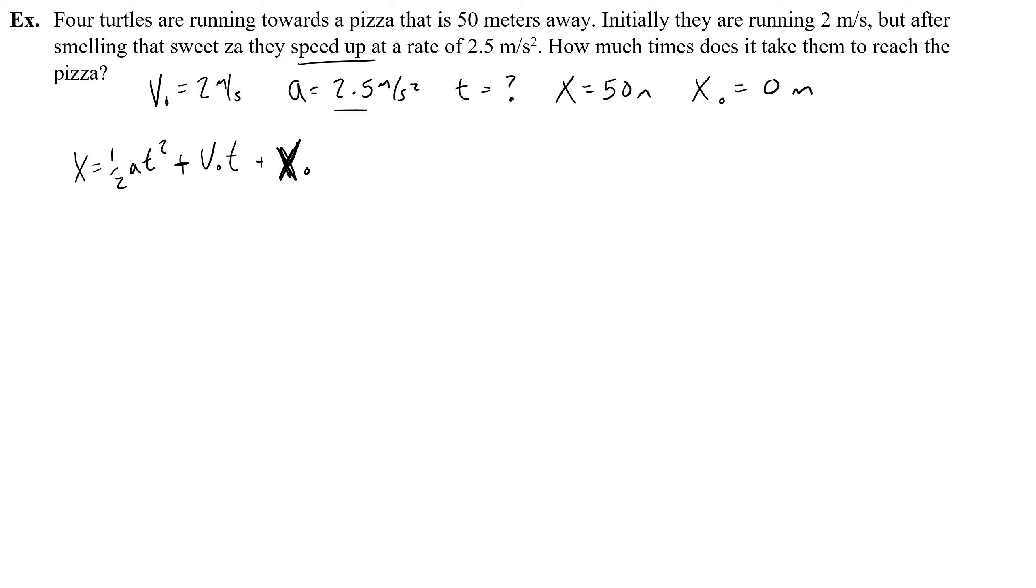So if I was going to graph this equation, I would write x equals, I wouldn't use 50, I'd say x equals, and then half the acceleration, 1.25t squared, plus the initial velocity 2t, and then I wouldn't add anything for the initial position, because it's 0.